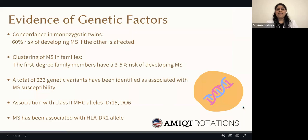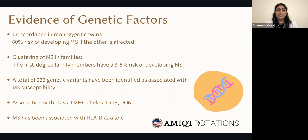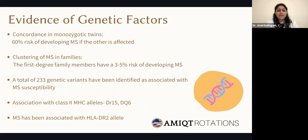There is also strong evidence for genetic factors. In monozygotic twins, if one twin has multiple sclerosis, there is a 60% risk for the other twin to develop it. Clustering in families has also been noted, with first-degree family members having a 3–5% risk of developing MS. To date, a total of 233 genetic variants have been associated with multiple sclerosis, including the DR15 alleles, Q6, and the HLA-DR2 allele.